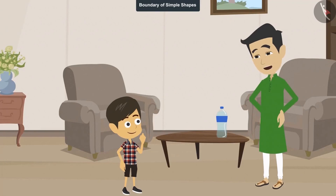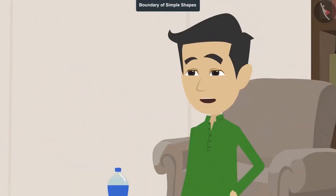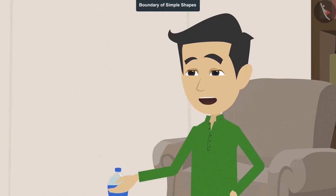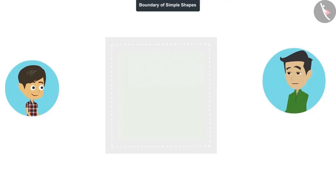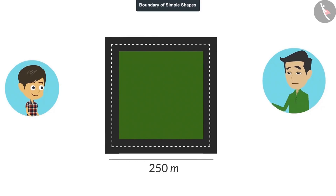It's very easy. You can find it the same way I found out. In the park where I go for my walk, the enclosure made for walking is the shape of a square. One side of its length is 250 meters. Now you tell me how many rounds do I have to walk to complete 3 kilometers?